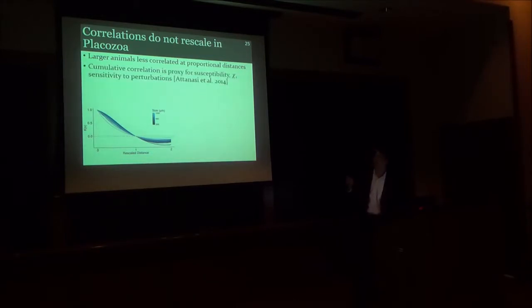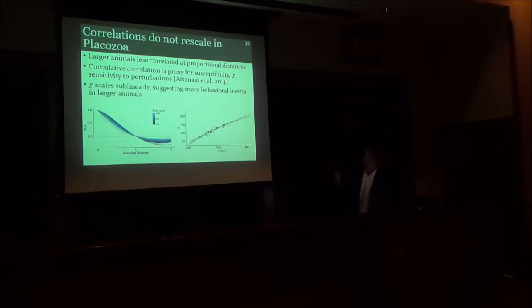I quantify this effect by looking at the cumulative correlation of these profiles, which was demonstrated by Attanasi et al. from Andrea Cavagna's group that this is a proxy for the susceptibility of the system. This reflects how sensitive the system is to perturbations, how likely it is to cause those avalanches of changes in behavior that I sort of talked about earlier. When I do this for placozoa, I find that the susceptibility scales sub-linearly, suggesting that in bigger animals they are less susceptible to perturbations and in effect have more behavioral inertia. It's less likely that there will be a big cascade of behavior that changes the entire animal's movement.